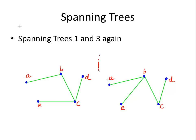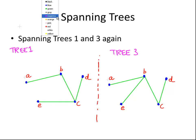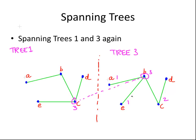This is tree one on this side and this is tree three. The degree-three vertex in tree one is C, and there is also a degree-three vertex in tree three. They are each connected to a degree-one vertex, a degree-one vertex, and a degree-two vertex. The degree-two vertex in both cases is connected to a vertex of degree three and a vertex of degree one. So these two trees are isomorphic.